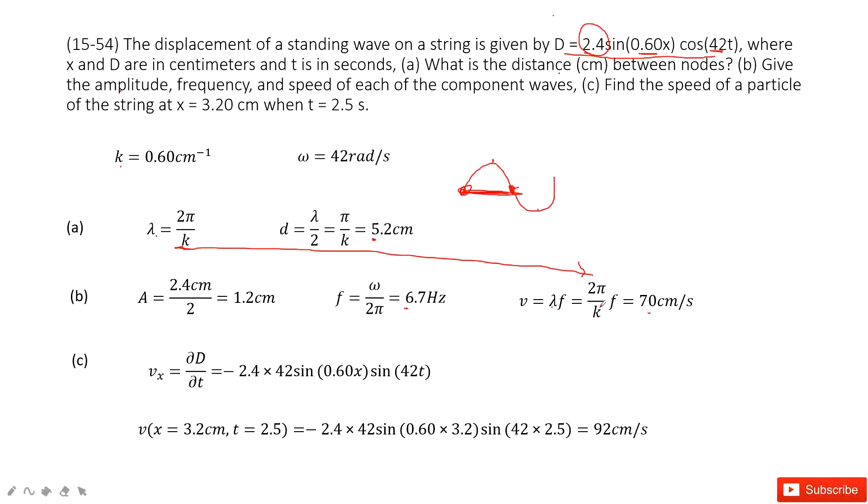The next one, find the speed of a particle at this position, x equal to 3.2 cm at t equal to 2.5 seconds. It looks like we need to find the speed at one position. So for this one, we do the derivation, partial derivation.